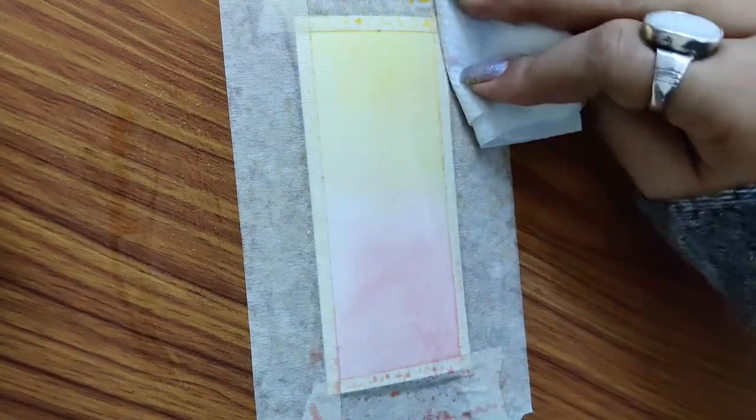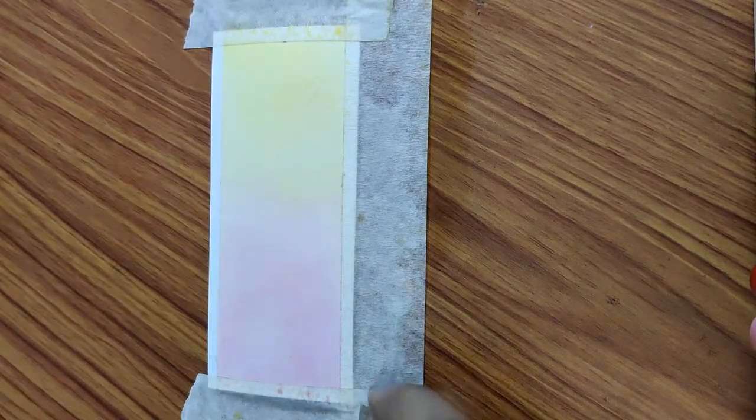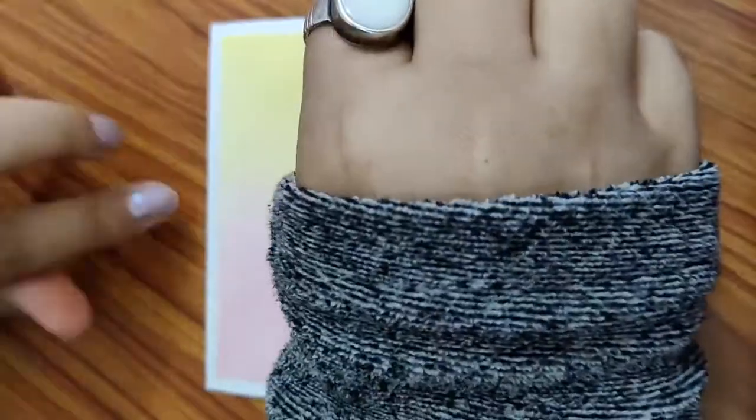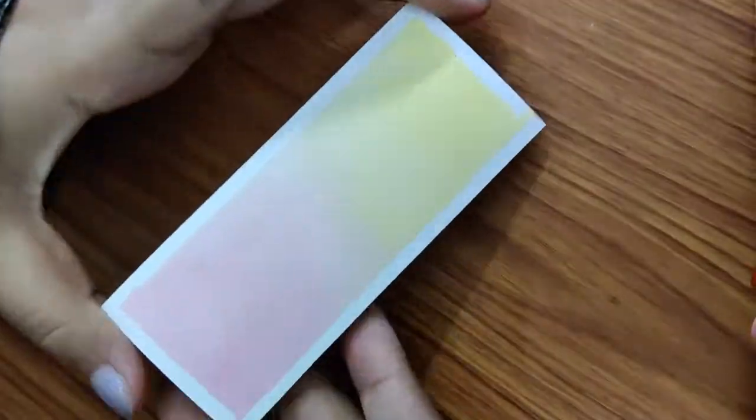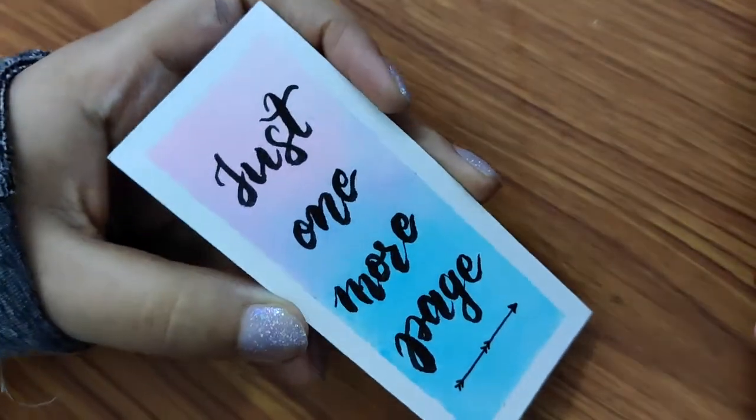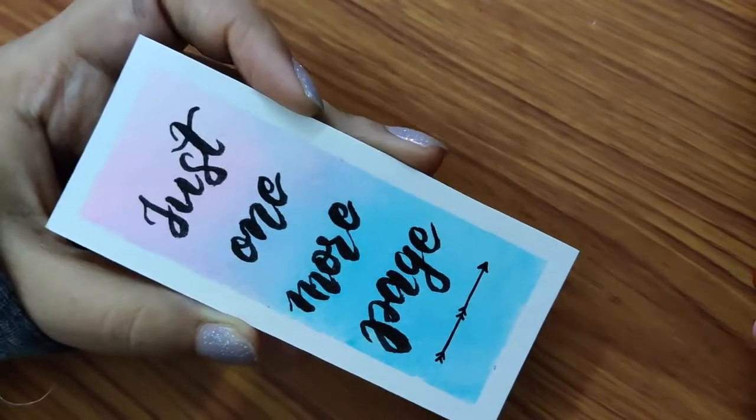You can use a tissue to remove the excess color. This is personally my favorite part. You can see the colors are mixed beautifully. Here's one more that I had made where I used pink and blue color.